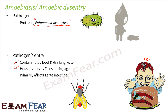Once it enters the body, the pathogen primarily affects the large intestine. The large intestine partially helps in digestion, but one of its most important functions is ejection — the removal of undigested matter out of the body. When this pathogen affects the large intestine, there are issues with the ejection process. You may still digest food to some extent, but the removal of undigested food doesn't happen properly.